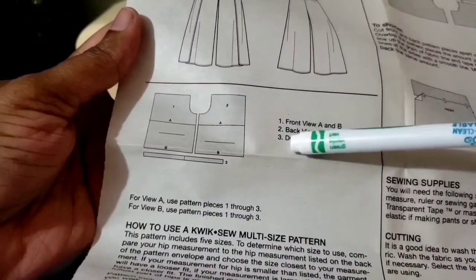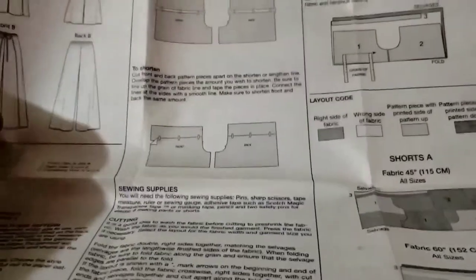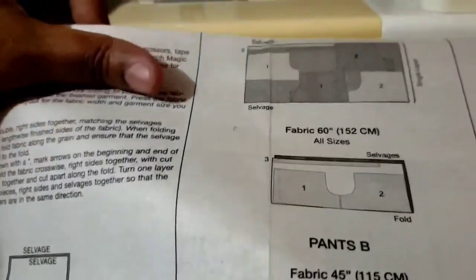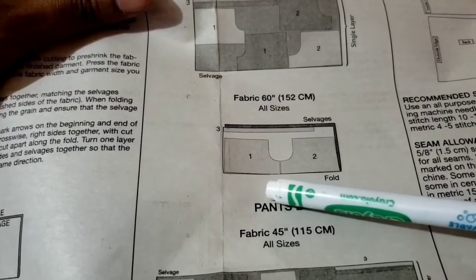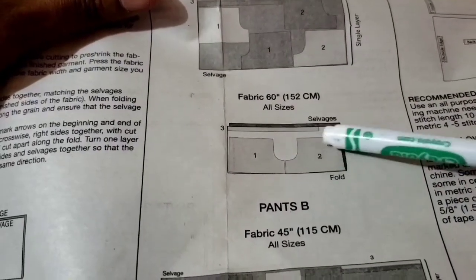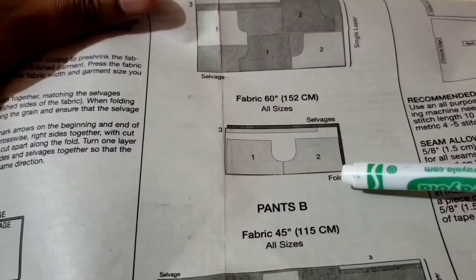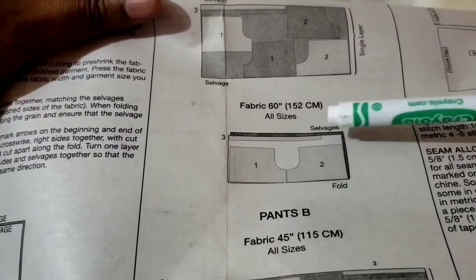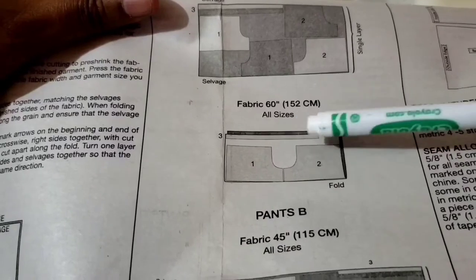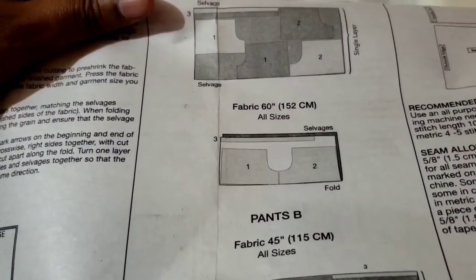For view A we're going to be using all three pattern pieces - one through three. Always read your instructions first in preparation for doing any project. The fabric that I have is 60 inches wide so I will be laying it out very easy - just like this, one this way, two the other way, and the drawstring at the top near to the selvedges. Notice it is on the fold but you'll have to split it because you're actually cutting two pieces of the front and two pieces of the back.